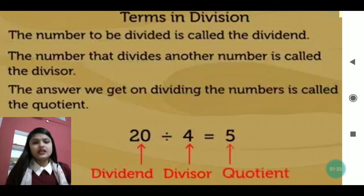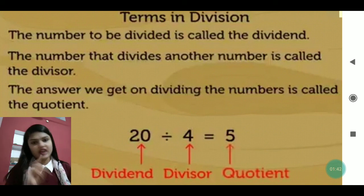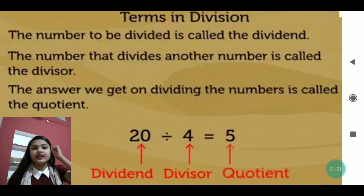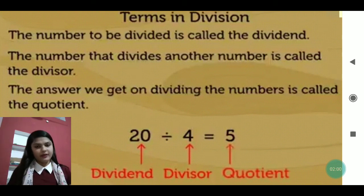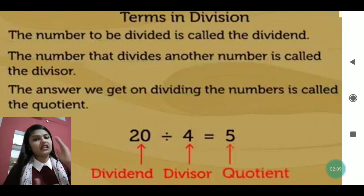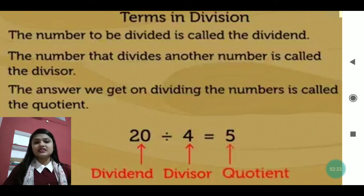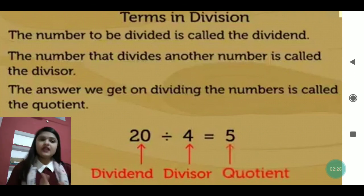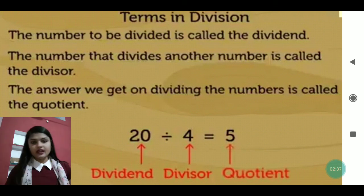The number to be divided is called the dividend. The number that divides the dividend is called the divisor. The answer we get on dividing is called the quotient. The leftover number, which is always lesser than the divisor, is called the remainder. For example: 20 divided by 4 gives quotient 5 and remainder 0, because it is completely divisible.